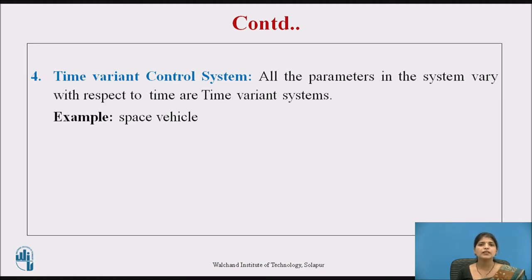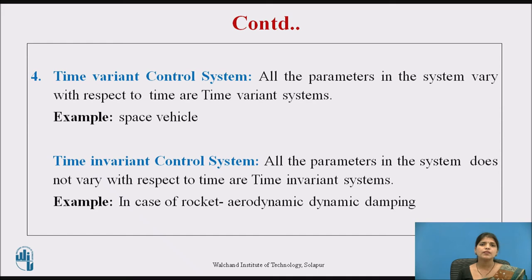The next type is the time-variant system, where all the parameters in the system vary with respect to time. An example is a space vehicle whose mass decreases with time as it leaves Earth — the mass is a parameter of the space vehicle system. Next is the time-invariant system, where all the parameters are constant and do not vary with respect to time. For example, electrical networks consisting of resistance, inductance, and capacitance are time-invariant systems, as the values of these elements are constant and not a function of time.